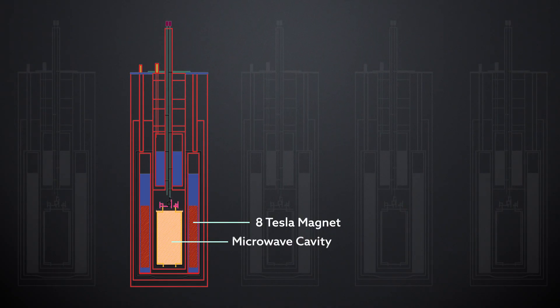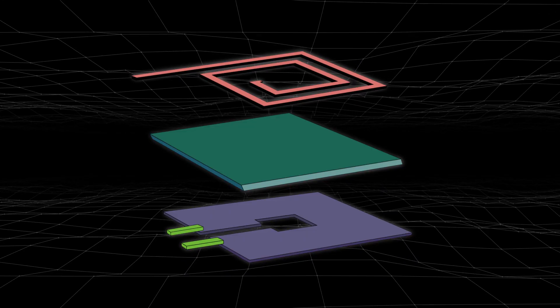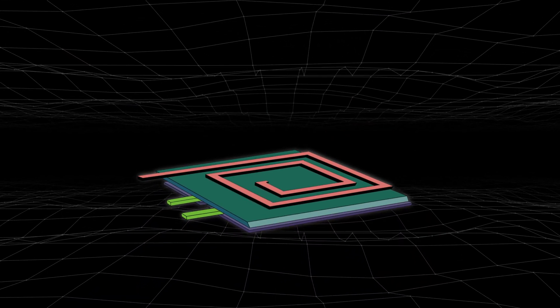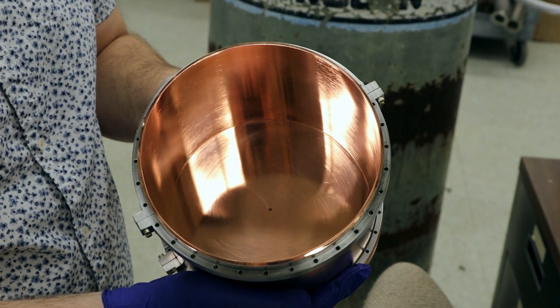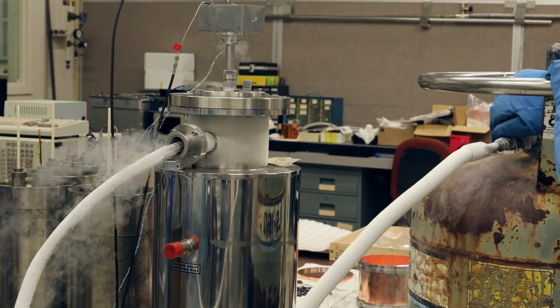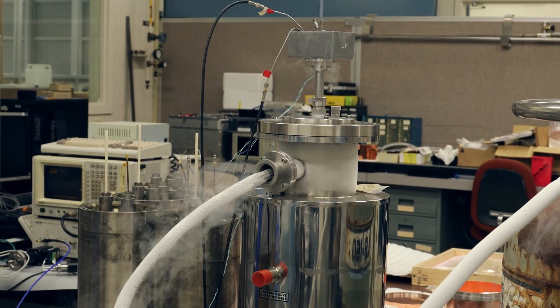The dark matter experiment really uses cutting edge quantum electronics. These quantum amplifiers that have been built at UC Berkeley for us are also used to read out qubits. And those qubits can be used for quantum computing. This is a high energy physics experiment that uses a lot of the same technologies that will be used for quantum computing in the future.